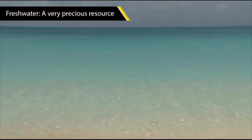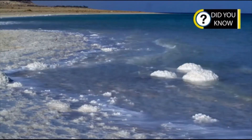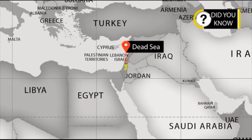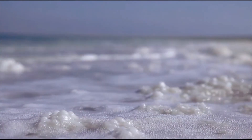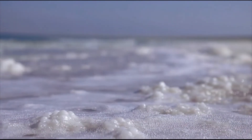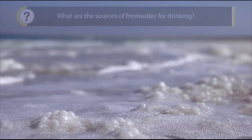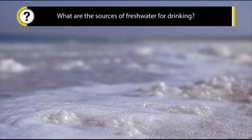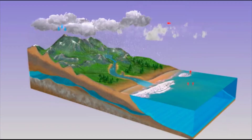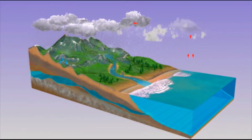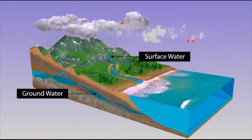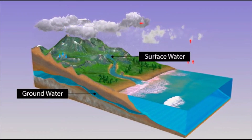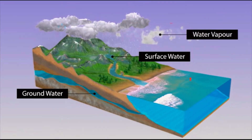Did you know the Dead Sea is a lake located between Israel and Jordan? The lake gets its name from the fact that its water is so salty that no plant or animal life is possible in it. Fresh water for drinking can be found in groundwater, surface water in rivers and lakes, and water vapor in the atmosphere.